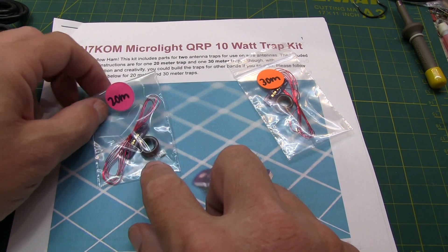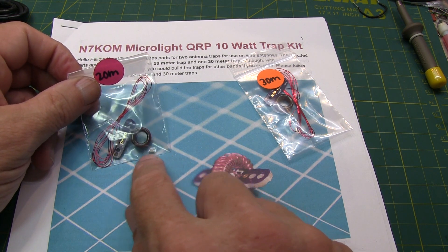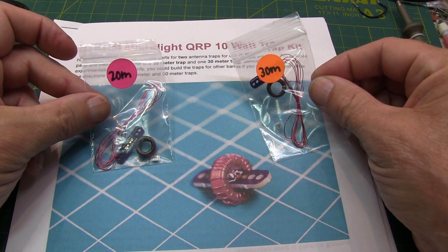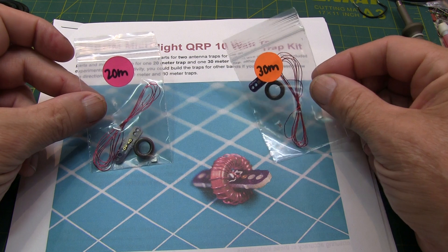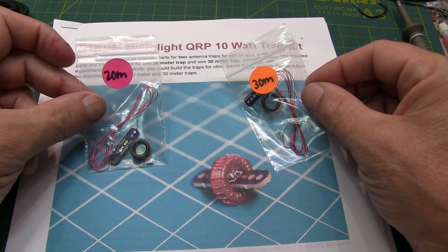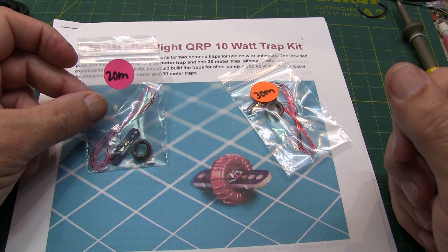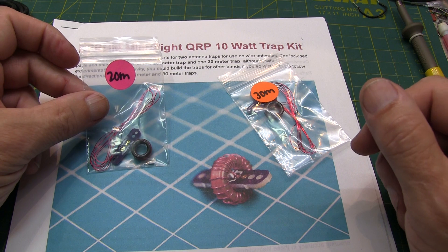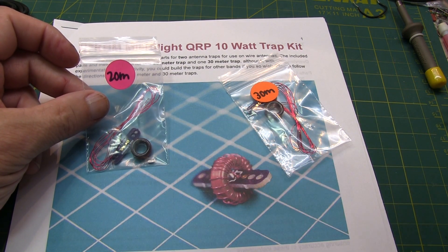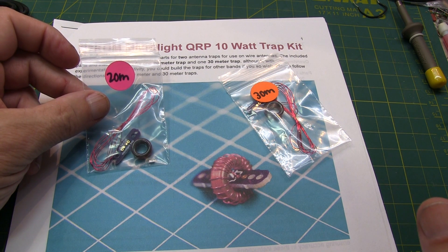He basically sends the kit that's got the toroid, a small circuit board, the capacitor that's used, as well as the wire. We've got a trap for 30 meters and a trap for 20. So building these two traps, we can then add some wire to it and make ourselves an NFED half wave coupled with your own 49 to 1 unun. In this video, we're just going to take a look at the process of building the traps and adjusting them to be resonant on the correct frequency. So stay tuned.